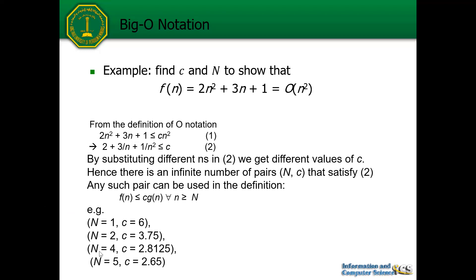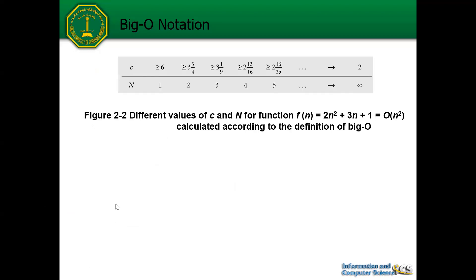There are other possible values of c and N — as we increase the threshold N, we can have different c's. We just need one pair to prove that a certain function is Big O of another function.